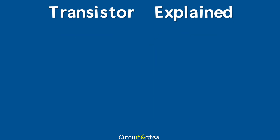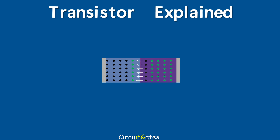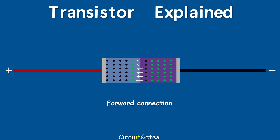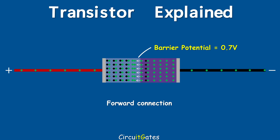When the PN junction is forward biased, it allows current to flow. In forward connection, the negative side of the energy source is connected to the n-type material and the positive is connected to the p-type material. The negative side repels electrons in the n-type material, forcing them to cross the junction, and also provides a continuous supply of electrons. As electrons cross the junction, they give up energy equal to the barrier potential, combine with holes in the p-type material, and move from hole to hole toward the positive side of the energy source. In this way, current flows.